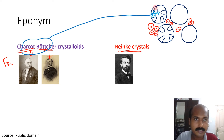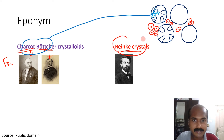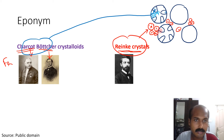The Charcot-Böttcher crystalloids are found in the Sertoli cells, especially in the basal aspects of Sertoli cells. The Reinke crystals are located in the interstitial cells of Leydig — you usually find a moderate to numerous number of Reinke crystals in the Leydig cells.